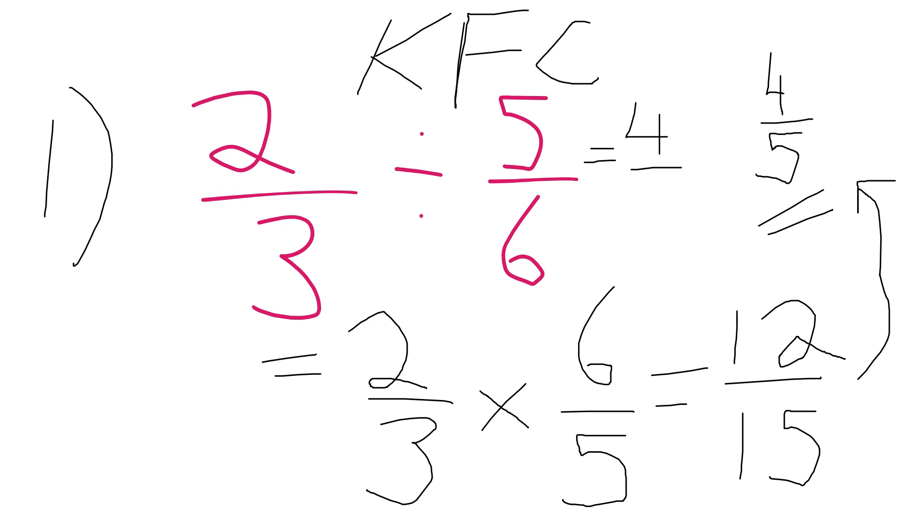And that's how we divide by a fraction: keep the first fraction the same, flip the second fraction or reciprocate it, and then change the division to a multiplication. Then multiply fractions: multiply top by top, bottom by bottom, and simplify your answer where possible. Thanks for watching.